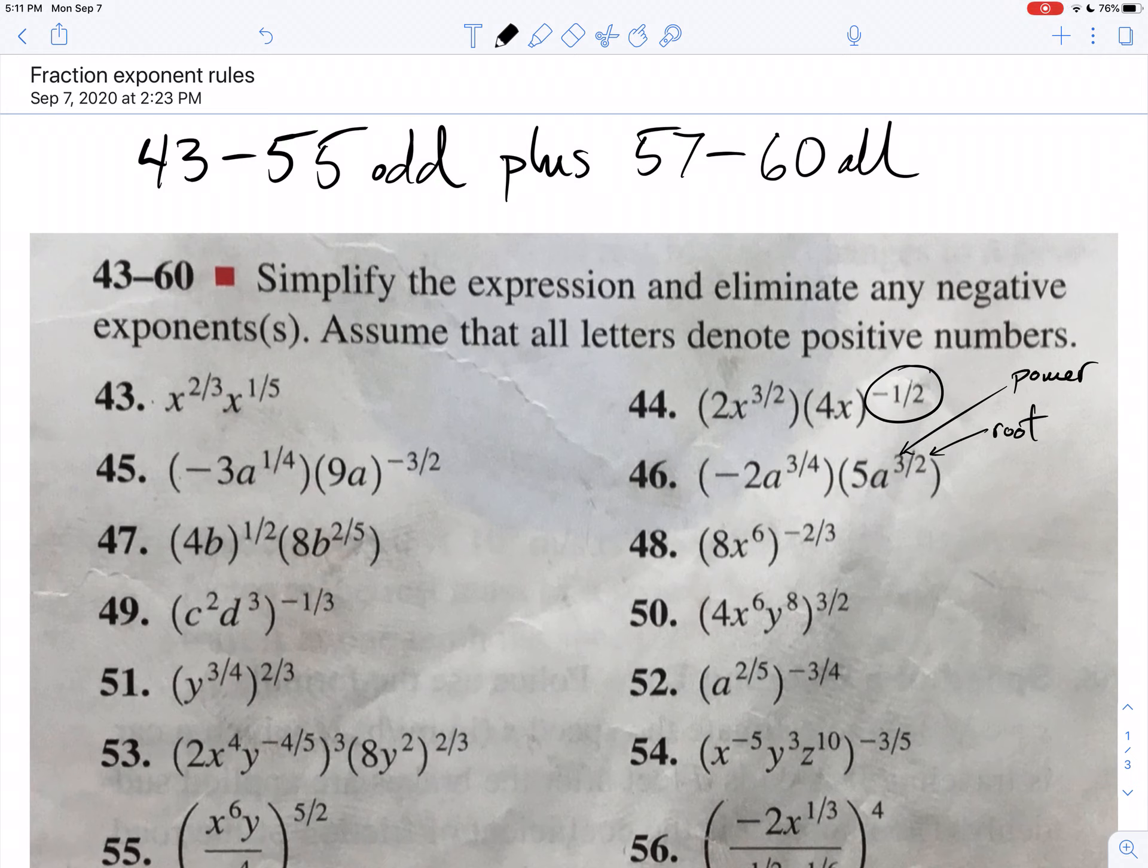Look at number 43. x to the two-thirds times x to the one-fifth. Well, what if this said x to the second times x to the first? You would just say it's x to the third. Well, it's the same rule. You're going to take these two numbers and do what? You're going to add them.